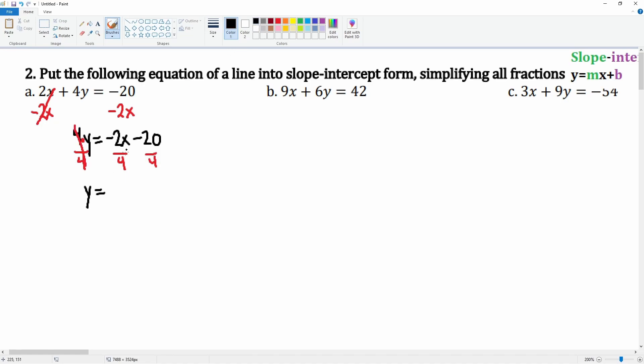This becomes negative one-half x minus 5. So that, there you go, that is slope-intercept form. The slope here is negative one-half, and the y-intercept here is negative 5. Let's do b.